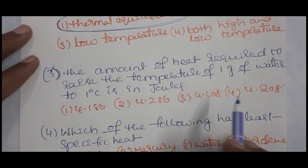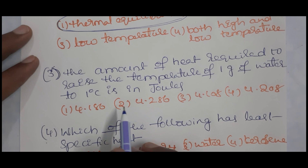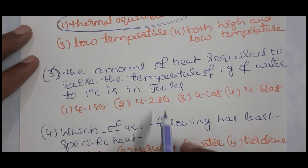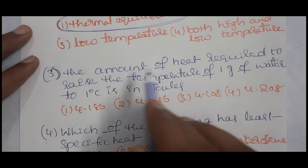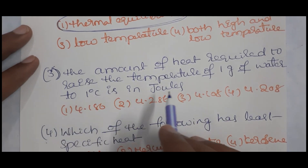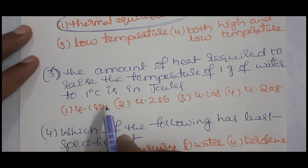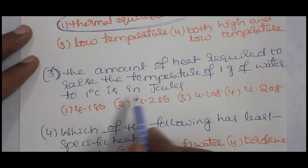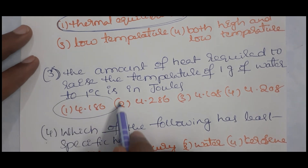The amount of heat required to raise the temperature of 1 gram of water by 1 degree Celsius is equal to 1 calorie. 1 calorie is equal to 4.186 joules.